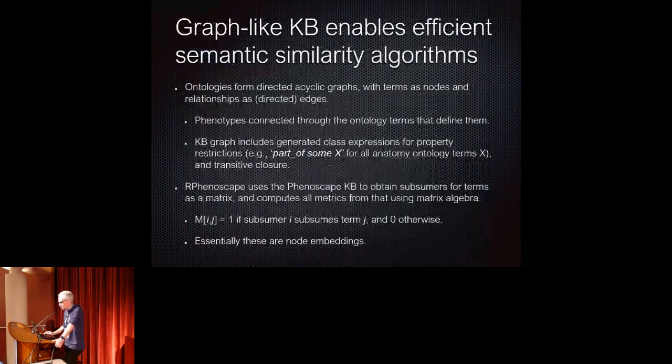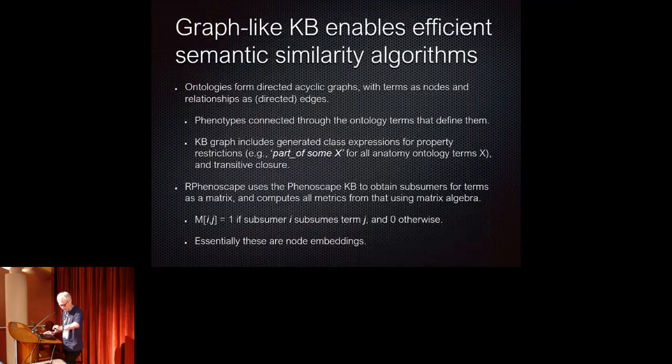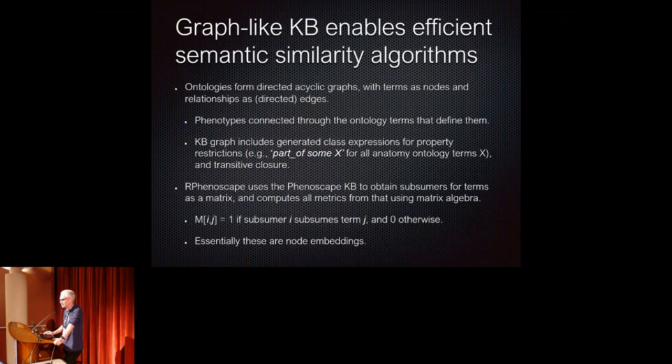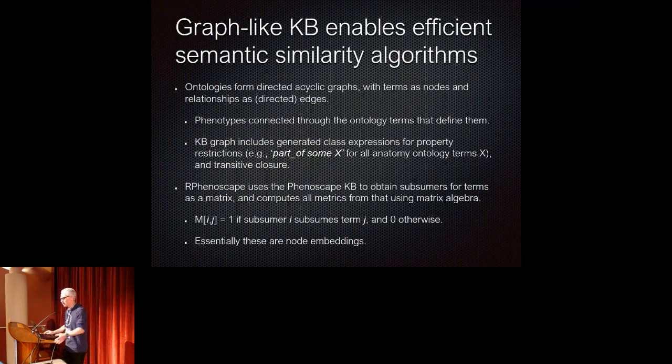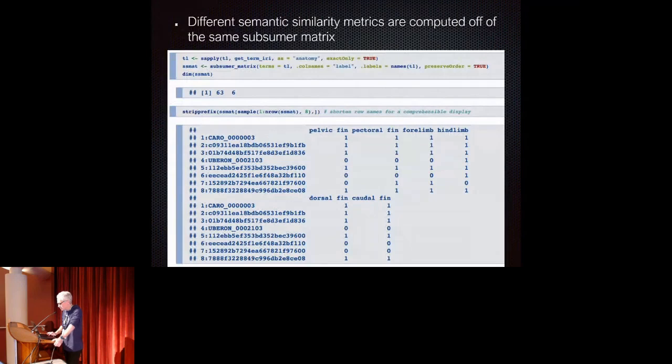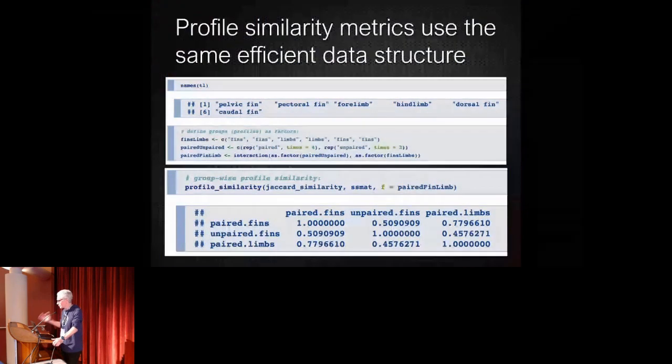And so I can, let me see. So how does this work under the hood? It actually uses a very computationally efficient data structure that we call a subsumer matrix that essentially creates a node embedding, if you will, using the subsumers for a given set of terms that you want to compute the semantic similarity across. And so how does this look, just as an example? So this is just a long list of subsumers you have as the rows, and then there's a one if the row term subsumes the column term and zero otherwise. And so, so why is this useful? It provides a really efficient matrix, is it allows really efficient matrix algebra to compare, to compute a whole number of semantic similarity matrix very quickly and without much effort using the facilities built into R already.